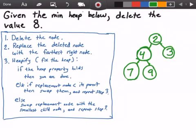So that's good. We're checking to see if 4 is less than its children, which are the 7 and the 9, and it is. So that's good. This heap property still holds true, so we are done.